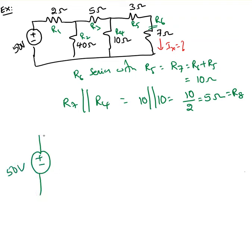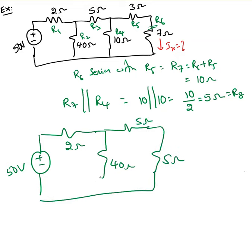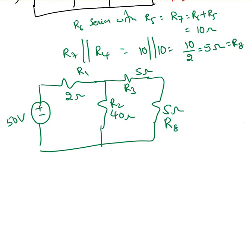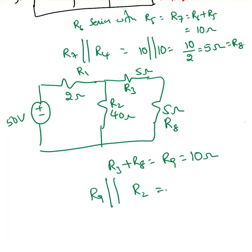In the redrawn circuit I have: 50 volts, 2 ohms, 40 ohms, 5 ohms, and 5 ohms. R8 equals 5 ohms. Now I can clearly see R3 is in series with R8, so R3 plus R8 — I'll label that R9 — which is 10 ohms. Now R9 is parallel with R2.